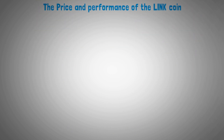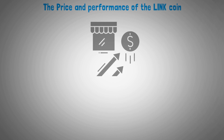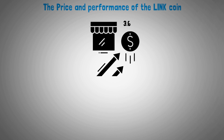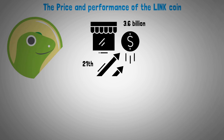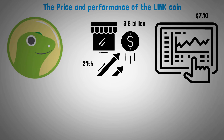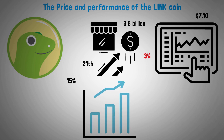The price and performance of the Link coin: Link, with a market cap of currently 3.6 billion, is the number 21 biggest crypto according to CoinGecko. It is currently trading around $7.10 and is down 3 percent for the day. It hasn't performed well lately as it's down over 15 percent for the month, and looking at the previous all-time high, it's 86 percent down ever since.